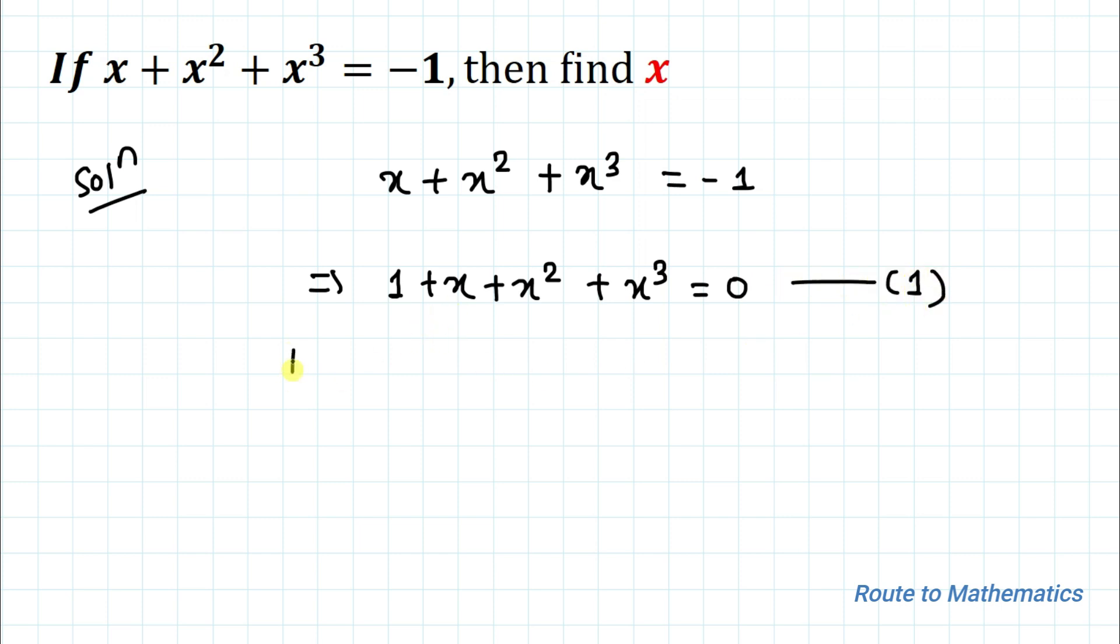From equation 1 we can say that x = 1 is not a solution since it doesn't satisfy this equation. Hence we can multiply (x - 1) to both sides of the equation. So we have (x - 1) multiplied with (1 + x + x² + x³) = 0.